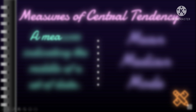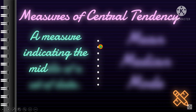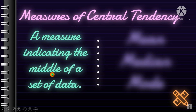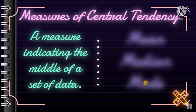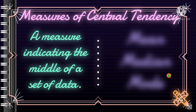Measures of central tendency is a measure indicating the middle of a set of data — not literally the middle, but it refers to finding a single value used to identify the center of the data. It's like computing your average — whether you're going to pass or fail. We have the following statistical averages: the mean, median, and the mode.